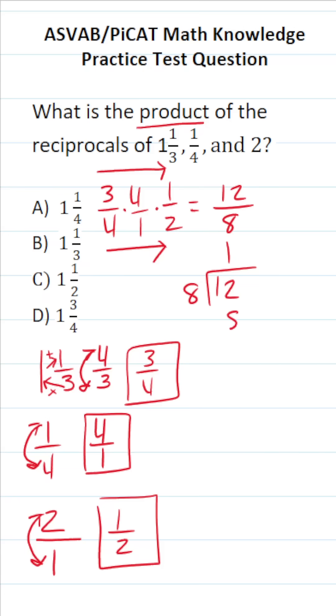1 times 8 is 8. 12 minus 8 is 4. We have enough to write our mixed number. This 1 is going to be our whole number. This 4 is going to be the numerator of our fraction. This 8 is going to be our denominator.